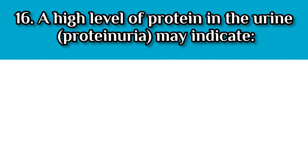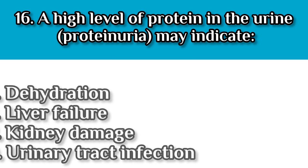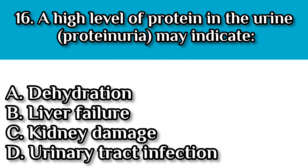Question number sixteen: A high level of protein in the urine may indicate: A. Dehydration, B. Liver failure, C. Kidney damage, and D. Urinary tract infection. Our answer is C, kidney damage, because protein in urine often indicates glomerular damage, which normally prevents large molecules like proteins from passing through.